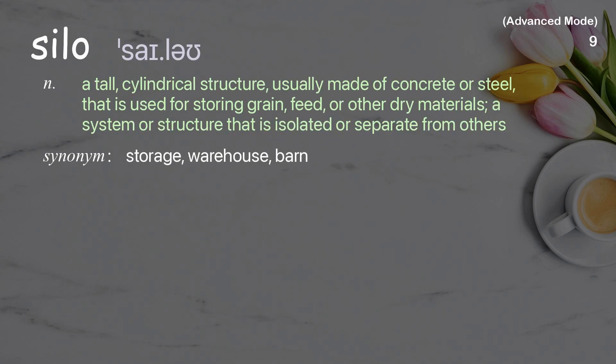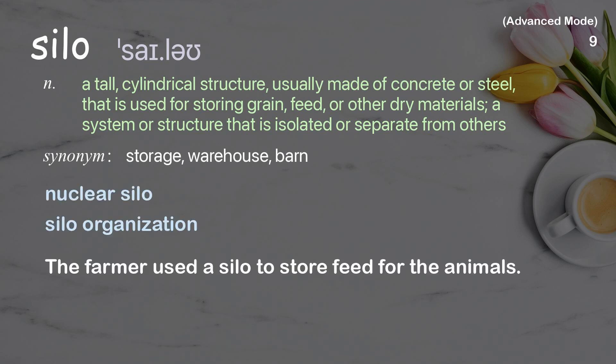Silo. A tall, cylindrical structure, usually made of concrete or steel, that is used for storing grain, feed, or other dry materials; also a system or structure that is isolated or separate from others. Examples: the farmer used a silo to store feed for the animals.